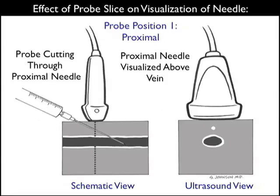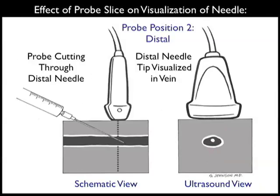When using the short axis technique, one must keep in mind the effect of probe slice on visualization of the needle. Note here the probe is positioned more proximally along the course of the needle, and even though the needle tip is securely within the vessel lumen, we're only visualizing the needle to be above the vessel — giving a false determination of where the tip actually is. Therefore, when using the short axis technique, it's important to move the probe along the course of the vessel to stay in plane with the tip of the needle as you advance it into the vessel lumen. Here we've moved the probe more distally and now we're more in plane with the tip of the needle, showing successful cannulation with the tip right within the vein lumen.